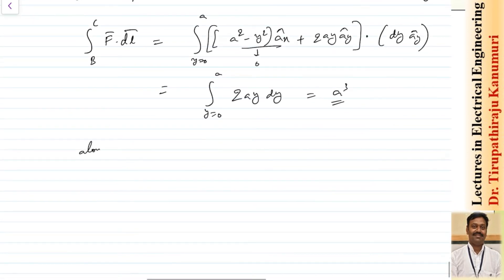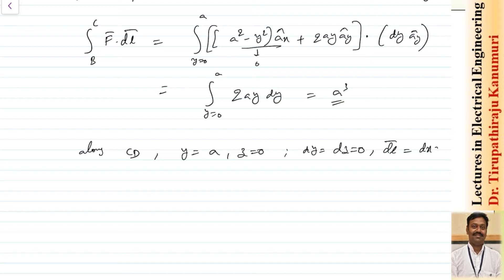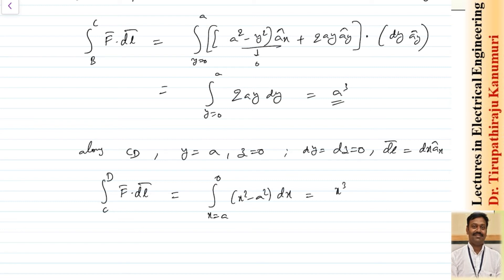Along path CD: y = a is fixed, z = 0, so dy = dz = 0, and the differential length is dx in the direction of ax. We integrate from x = a to 0, giving the integral of (x²−a²)dx, which evaluates to [x³/3 − a²x] from a to 0, resulting in 2a³/3.